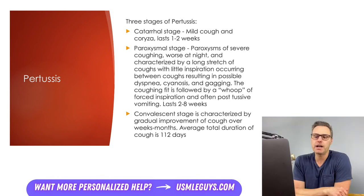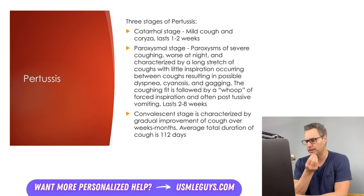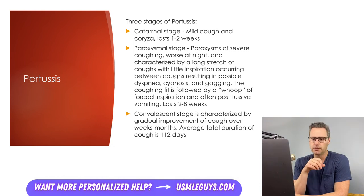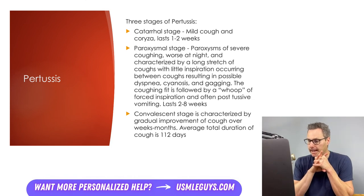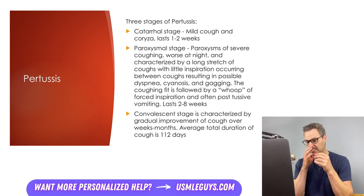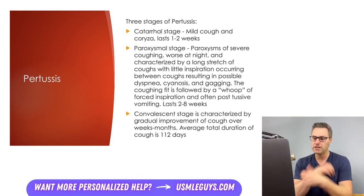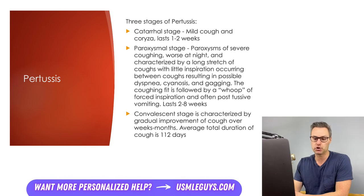The paroxysmal stage is characterized by paroxysms of severe coughing that is worse at night, with a long stretch of coughs with little inspiration between them, possibly resulting in dyspnea, cyanosis, and gagging. The coughing fit is followed by that classic whooping sound, and possibly post-tussive vomiting. The paroxysmal stage lasts two to eight weeks. The convalescent stage is characterized by gradual improvement of the cough over weeks to months; average total duration of cough is 112 days. If another respiratory infection occurs during convalescence, the severe cough may return.